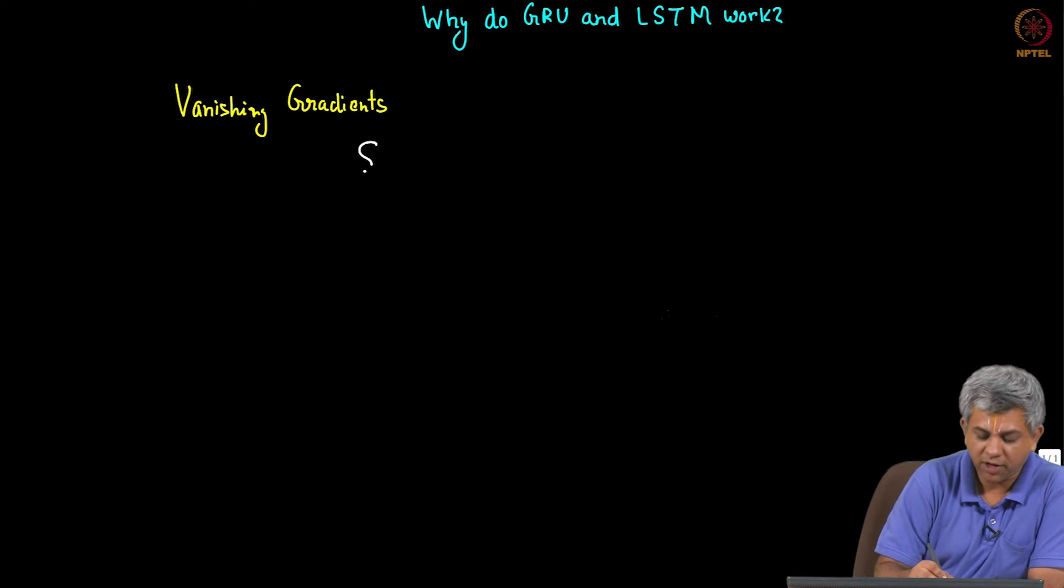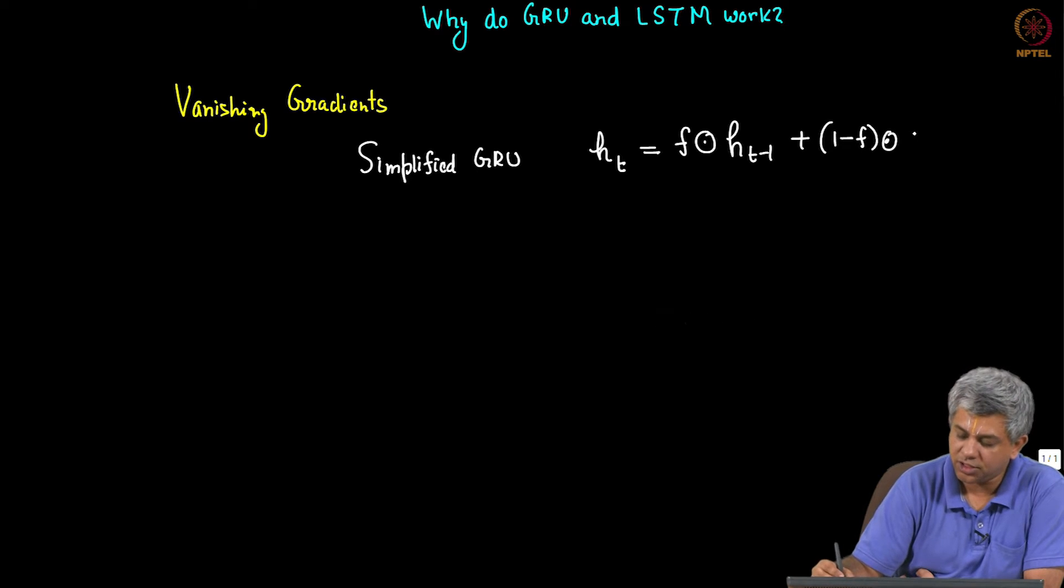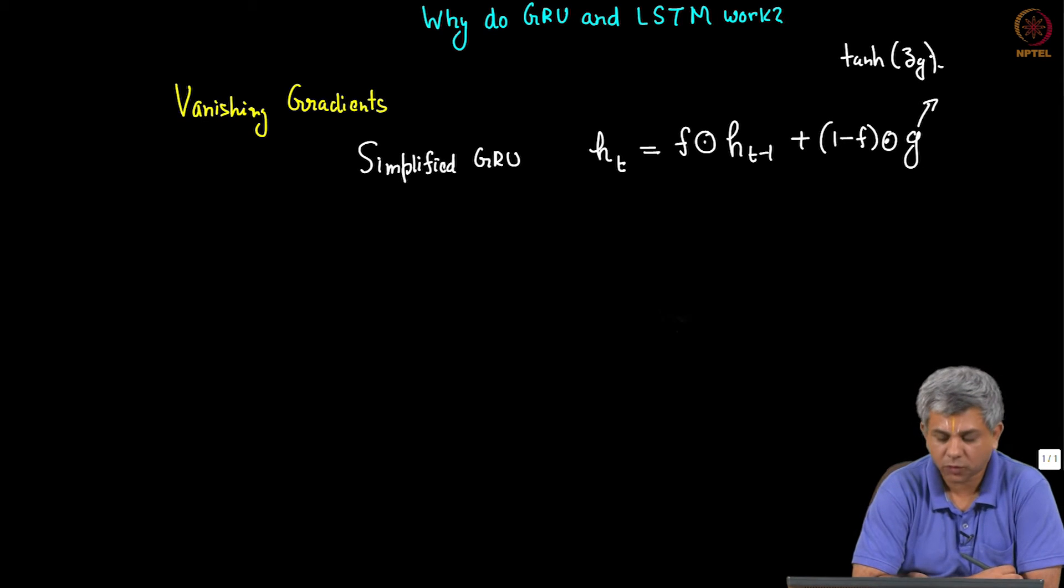Remember that when we had simplified GRU, our expression was h_t is some nonlinearity. It was actually F times h_{t-1} plus (1 - F) times G, where G was our tanh of z_G. This was the expression that we used.